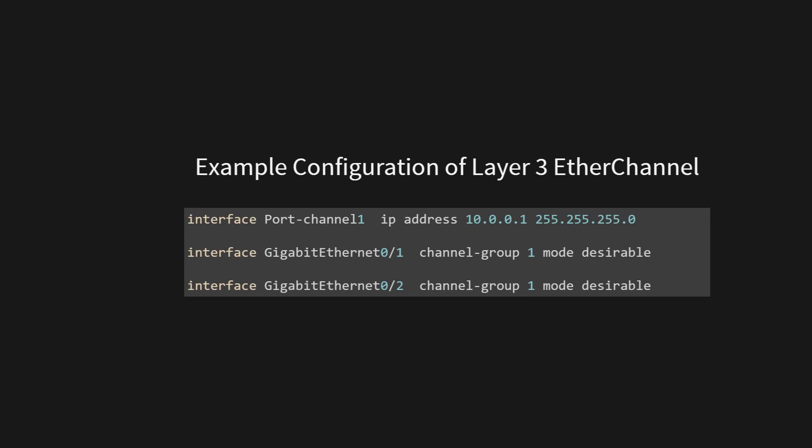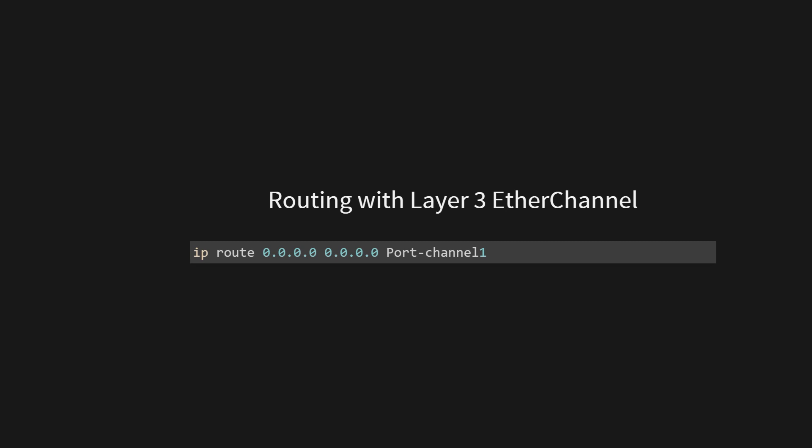Suppose we have two physical interfaces, GigabitEthernet 0/1 and GigabitEthernet 0/2, that we want to bundle into a Layer 3 EtherChannel with IP address 10.0.0.1 and subnet mask 255.255.255.0. We create the Layer 3 EtherChannel interface, port channel 1, and assign it the IP address. The physical interfaces are then added to the EtherChannel port channel 1 using PAGP negotiation protocol with desirable mode. You could also use LACP or create a static EtherChannel for Layer 3 EtherChannel. After configuring, you can use the virtual interface, port channel 1, in your routing protocols or as a gateway for hosts in your network.